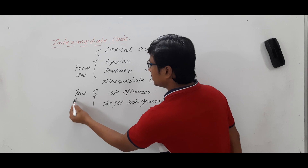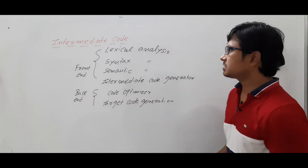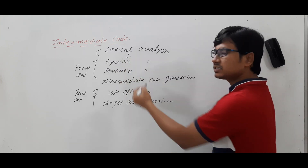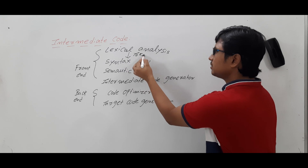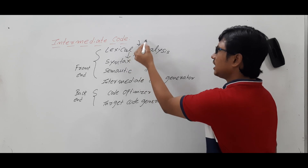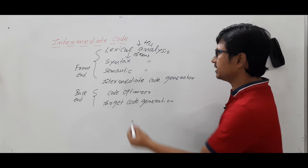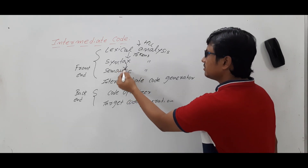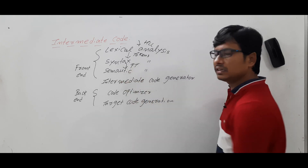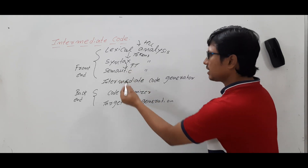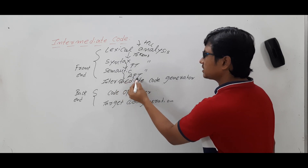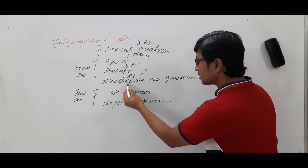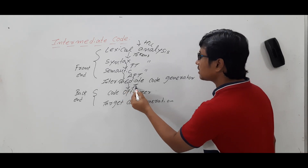and we have the target code generation. These two phases of the compiler we call the back end of the compiler. Now, lexical analysis will generate a stream of tokens from the high-level language. These tokens are given to syntax analysis, which generates the parse tree. The parse tree is given to semantic analysis, which produces the annotated parse tree. This annotated parse tree is given to the intermediate code generator, which generates the intermediate code.